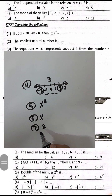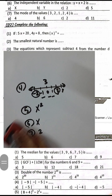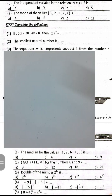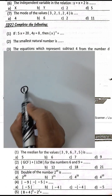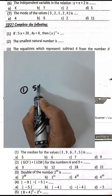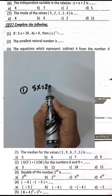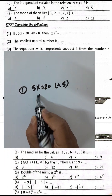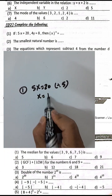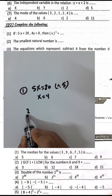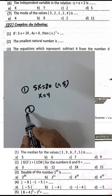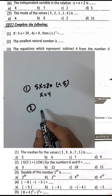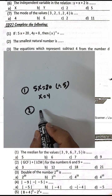Question number 1: Complete the following — if 5x equals 20, divide by 5, so x equals 20 divided by 5, which equals 4. Question number 2: The smallest natural number is 0.